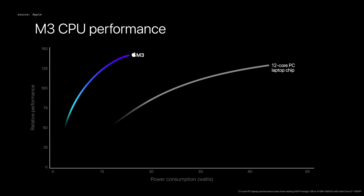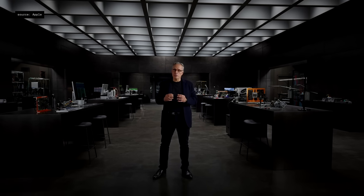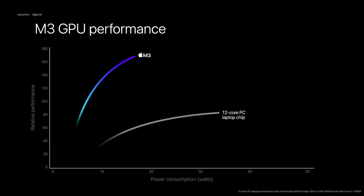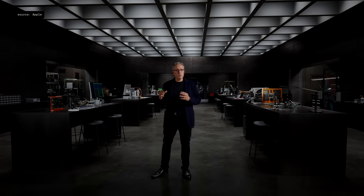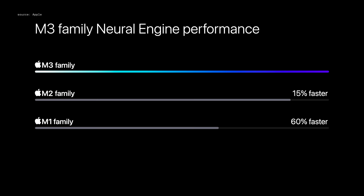When we compare it against the latest 12-core PC laptop chip, it delivers the same CPU performance using just one quarter of the power. M3, M3 Pro, and M3 Max also have a faster and more efficient neural engine — a breathtaking 60% faster than the M1 family.